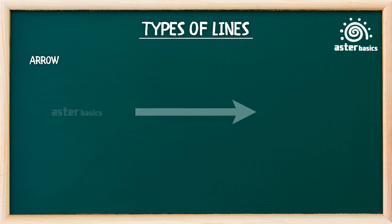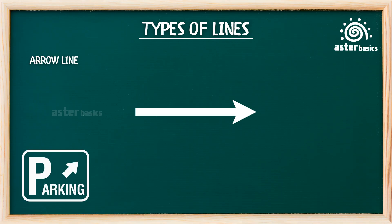Arrow line: a line with an arrow at the end, pointing somewhere. Arrow lines are used for showing direction or movement. They're the tour guides of drawings — saying, follow me, or go this way.